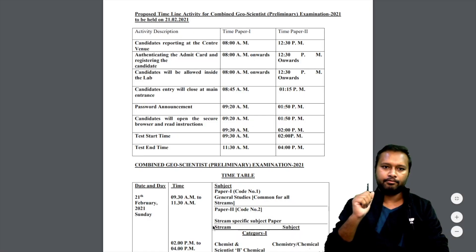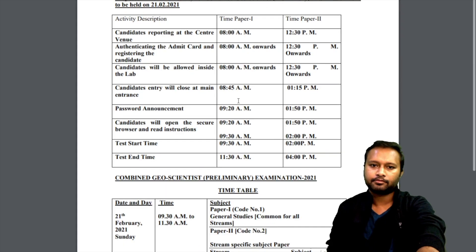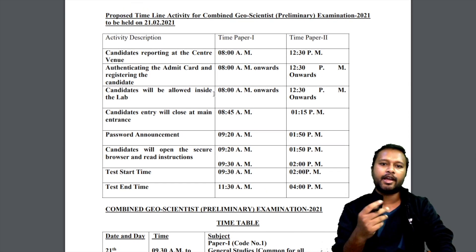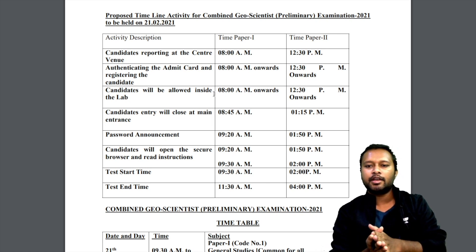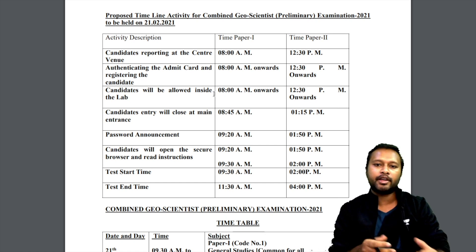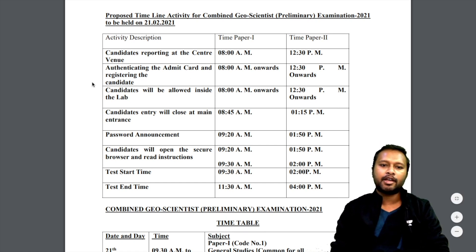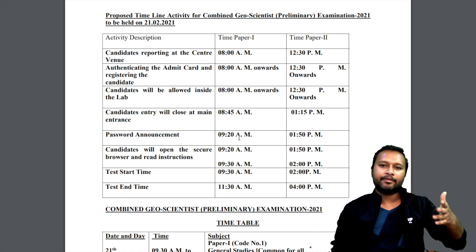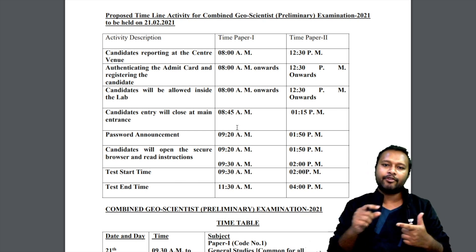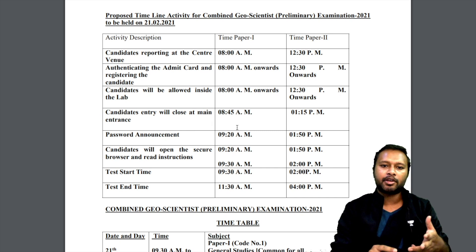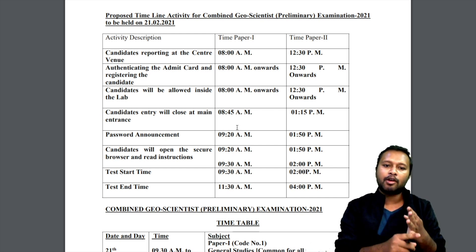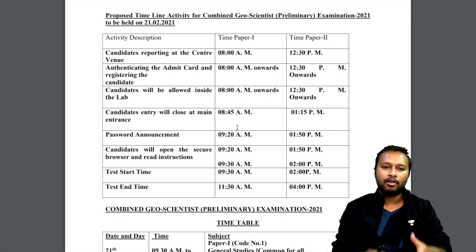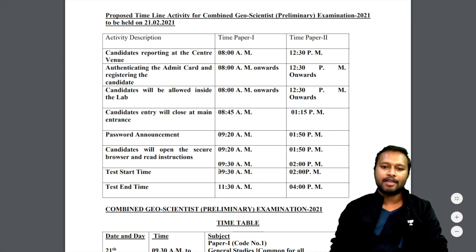Clicking on it opens the proposed timeline of activities for the Combined Geoscientist Exam, which is going to be held on the 21st of February. These include candidate reporting time, authentication of the admit card, registering the candidate, and so on. All these activities are scheduled on the day of the exam in 15-minute intervals — when to reach, when to authenticate your admit card, when you'll be allowed to sit, when the gate closes, when you can enter the password, and when the test starts.